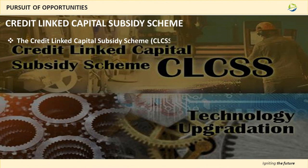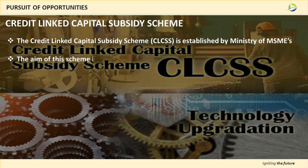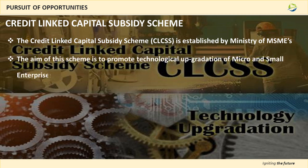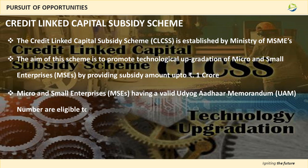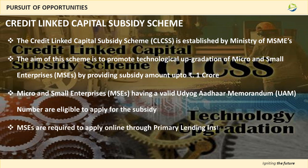The main focus of this scheme is to promote technological upgradation of micro and small enterprises by providing a subsidy of up to Rs 1 crore. Micro and small enterprises having a valid Udyog Aadar memorandum number are eligible to apply for this subsidy. It is necessary to apply online through primary lending institutions to claim the subsidy under CLCSS.